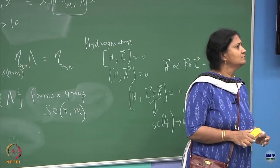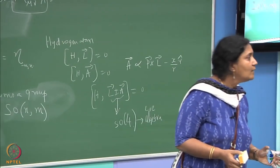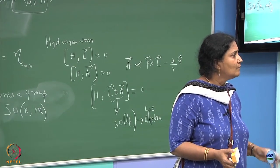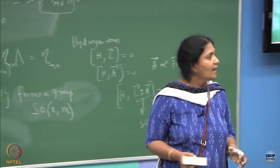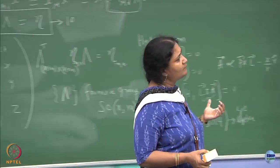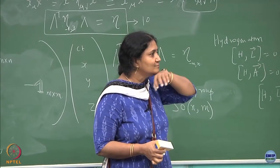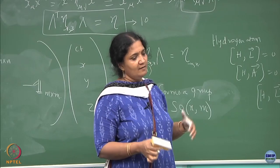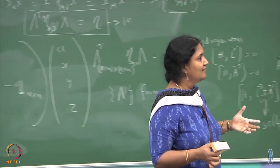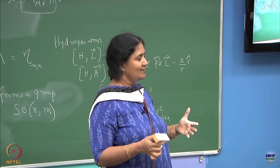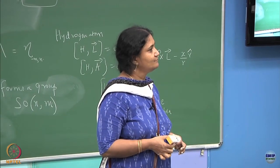O(N,M) will just be, in a sense, a direct product with the discrete symmetry group. Instead of doing only inversion in space as you would have done in SO(N), you will have both time reversal and space inversion possible.